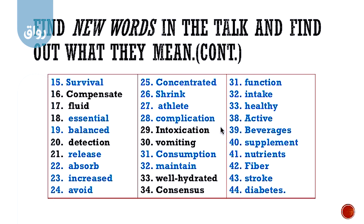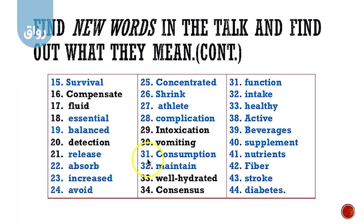Then we have 'complication' — اللي هي المضاعفات. بتجي أحياناً بعض المضاعفات مع الدواء أو العملية نسميها complication. Then we have 'intoxication' — اللي هي التسمم. Then 'vomiting' — اللي هو القيء. Then word number 31 is 'consumption' — اللي هو استهلاك.